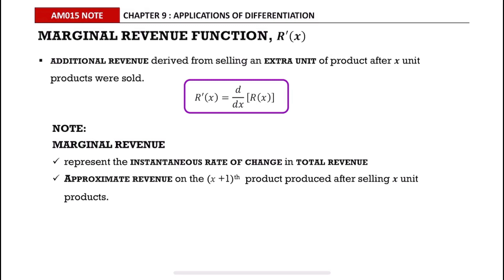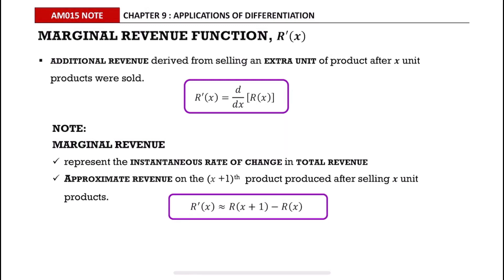Marginal revenue represents the instantaneous rate of change in total revenue, and it approximates the revenue on the (x+1)th product produced after selling x units. It simply approximates to R(x+1) minus R(x).